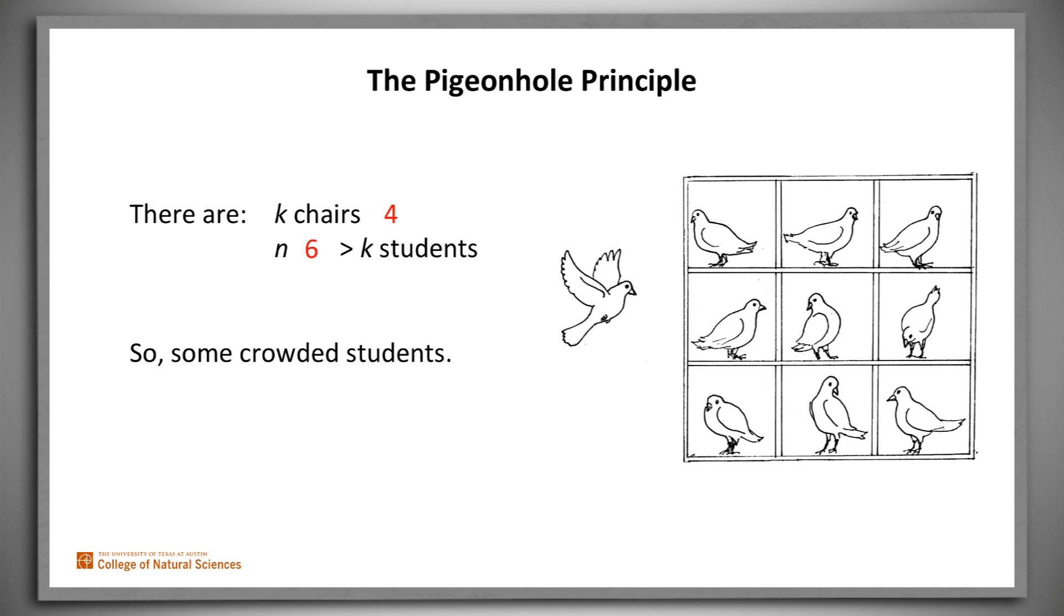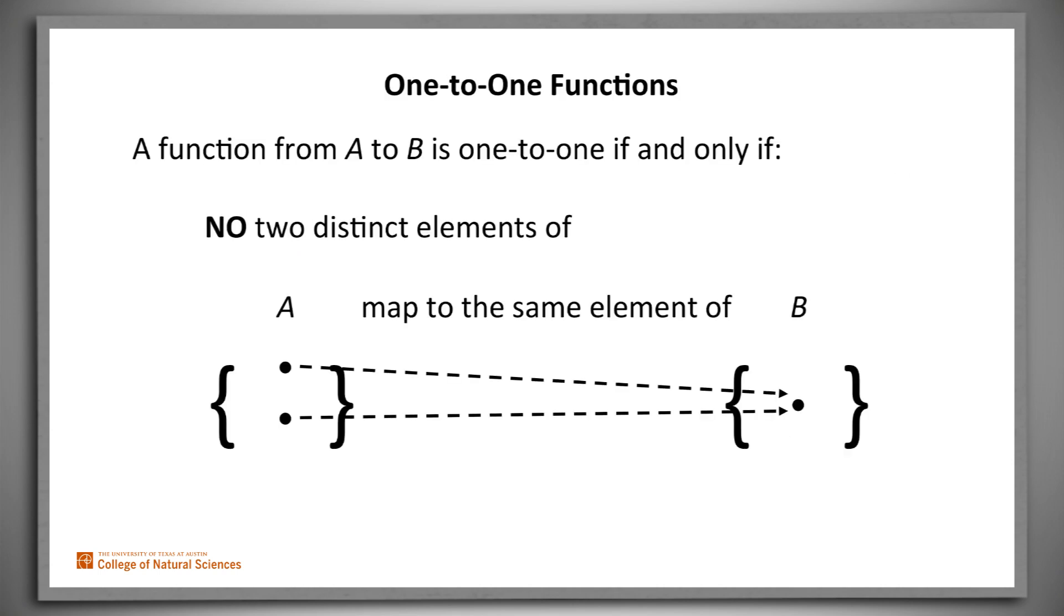To do that, we need to rely on the notion of a one-to-one function. A function from A to B is one-to-one if and only if no two distinct elements of A map to the same element of B.